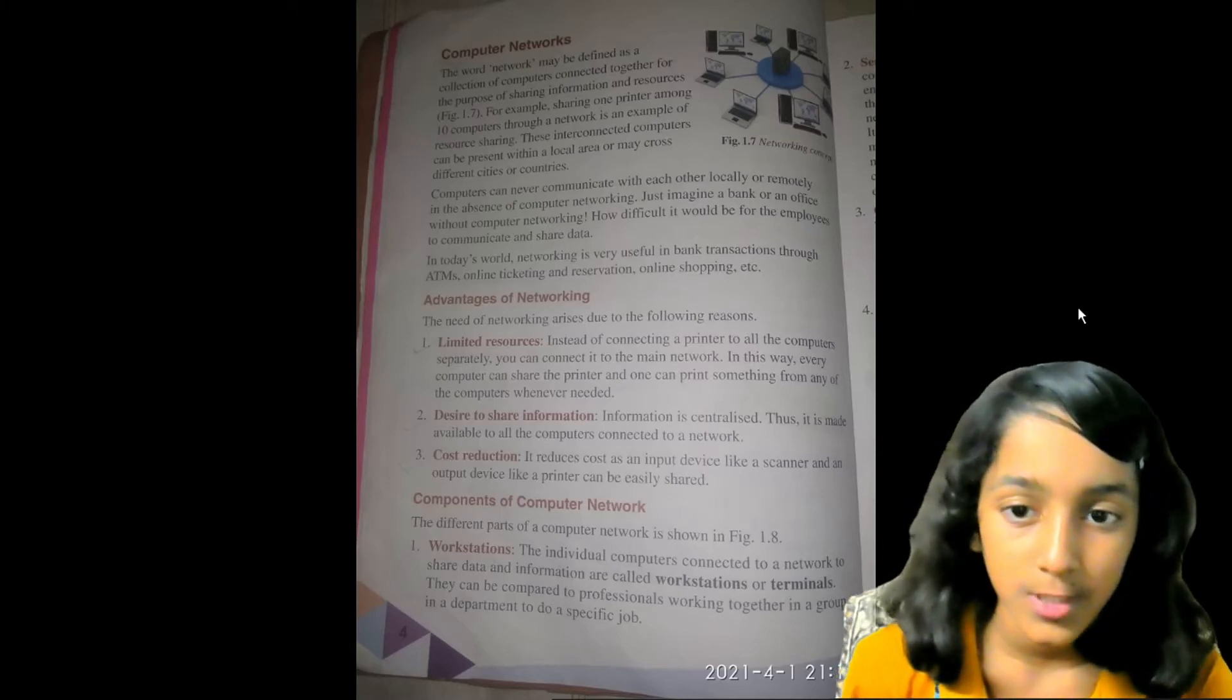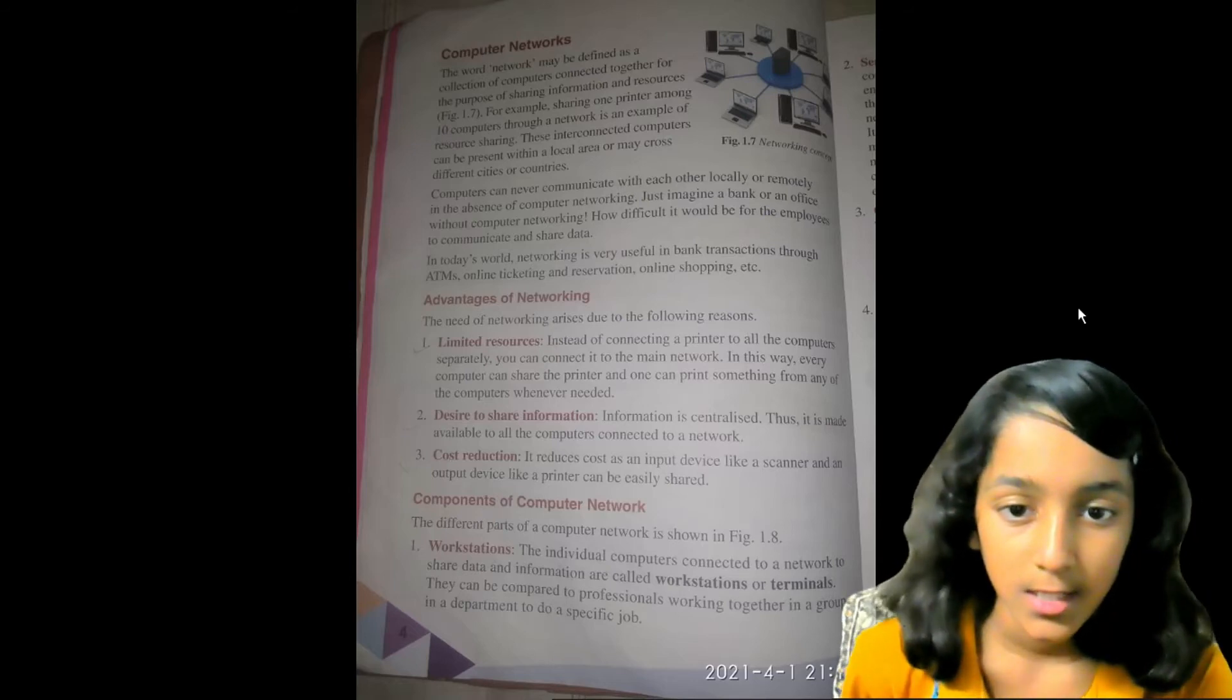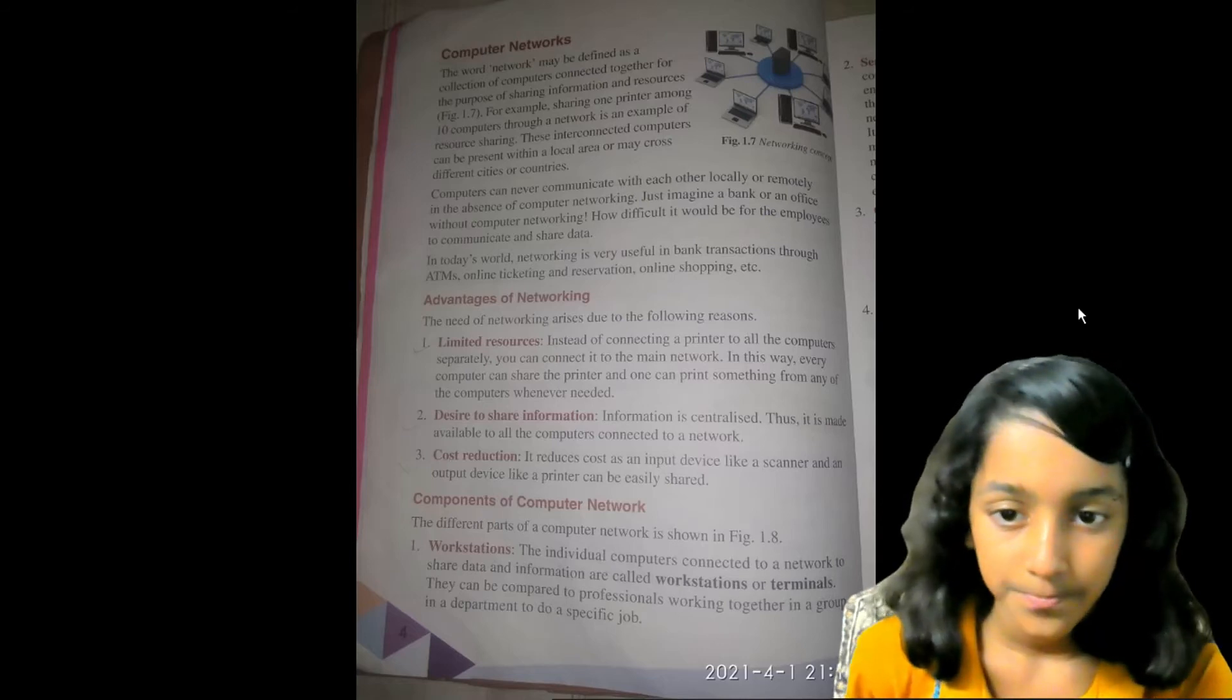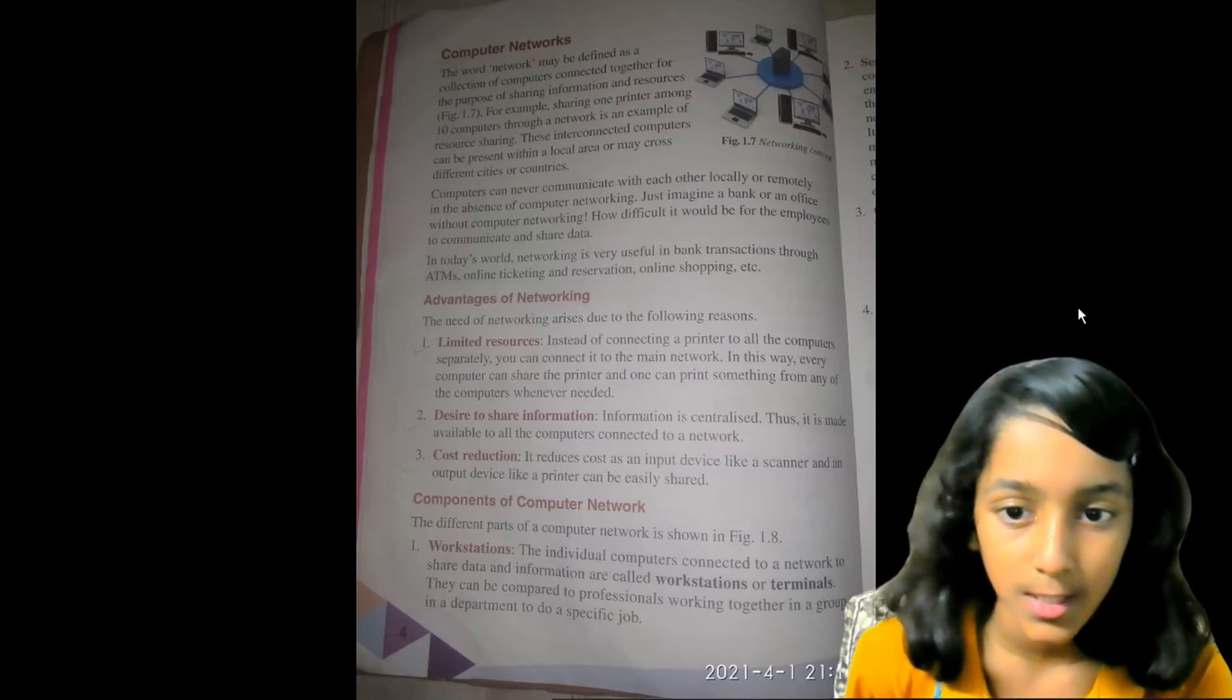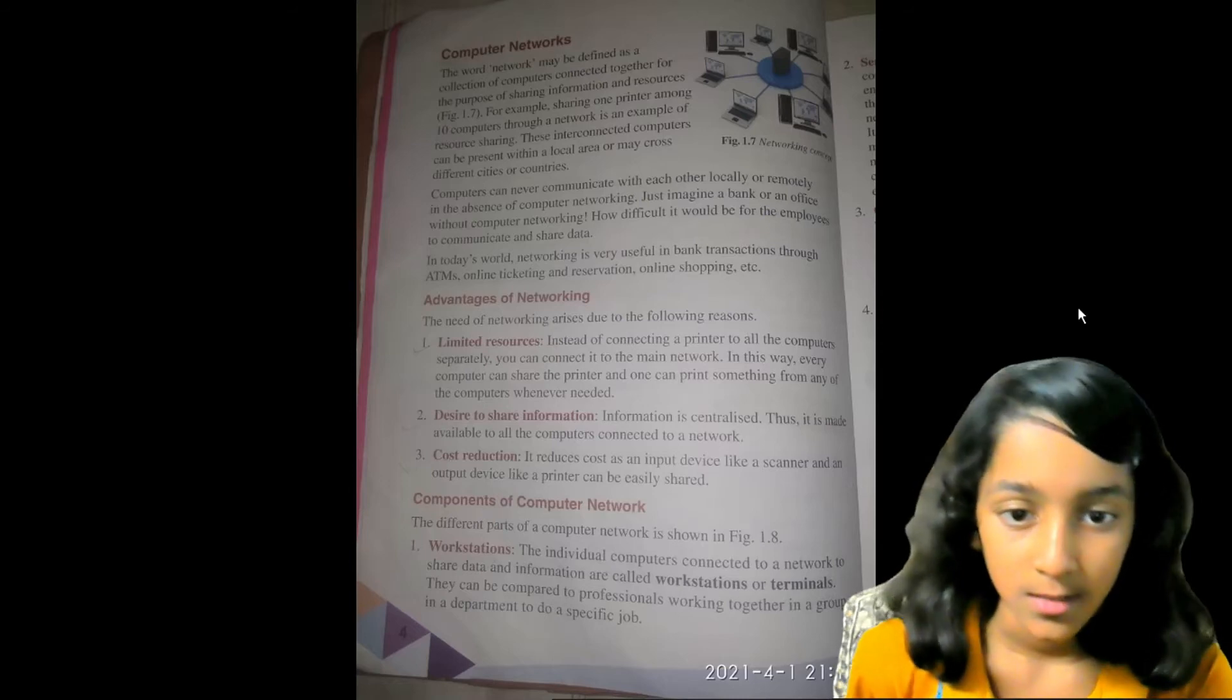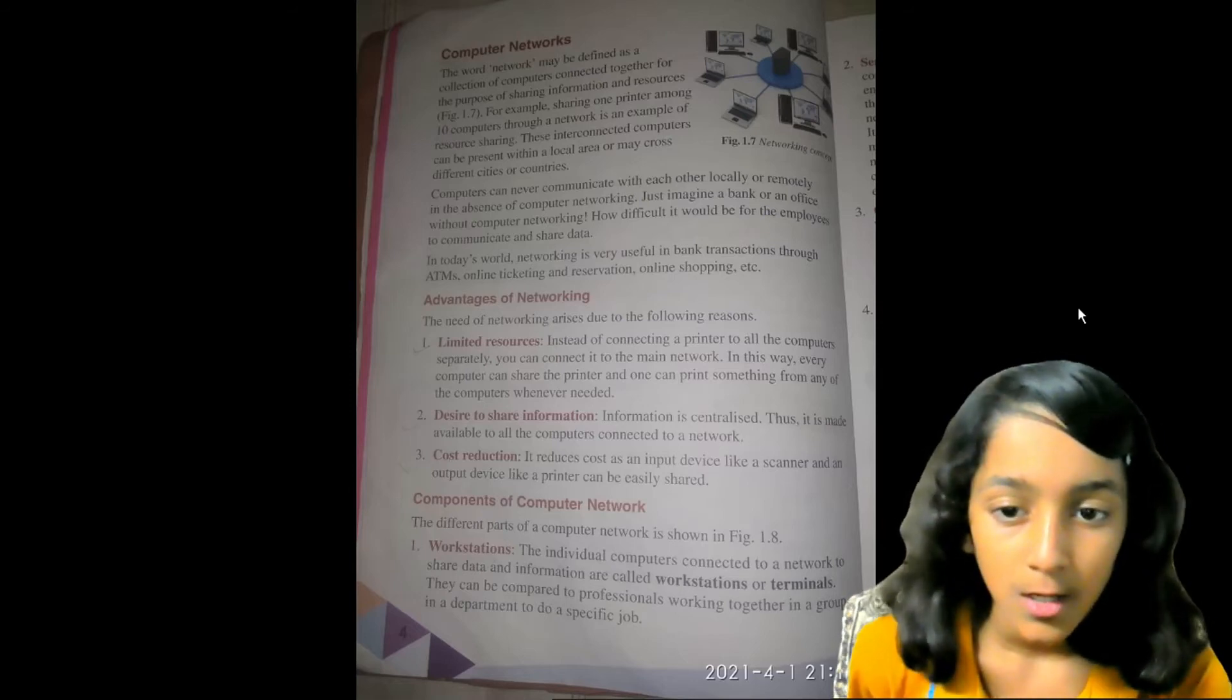Components of computer network. The different parts of a computer network is shown in figure 1.8. Workstations: The individual computers connected to a network to share data and information are called workstations or terminals. They can be compared to professionals working together in a group in a department to do a specific job.